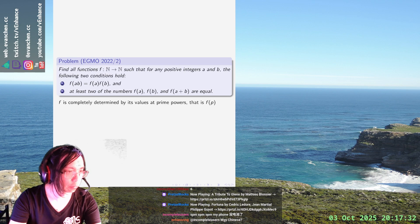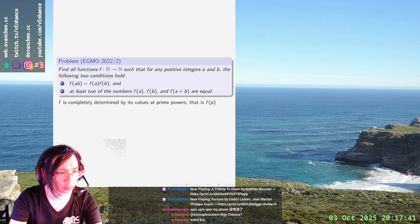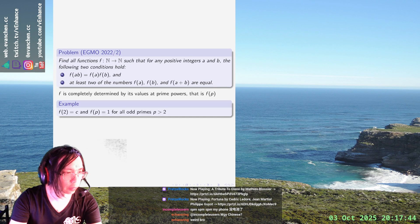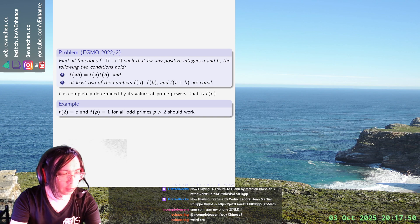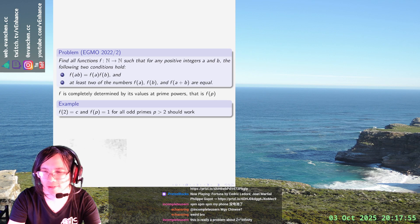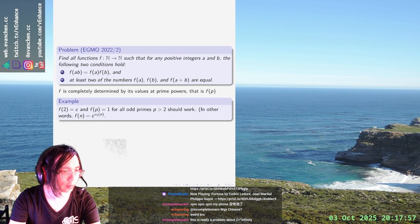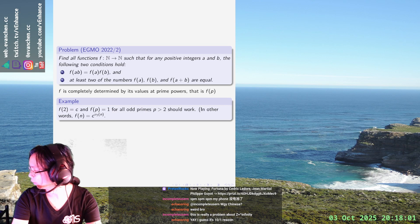In general, letting f of 2 equal whatever constant I want, and if f(p) was 1 for all odd primes p greater than 2, should work. In other words, f(n) is equal to c to the v2(n). I feel like there shouldn't be any other solutions.